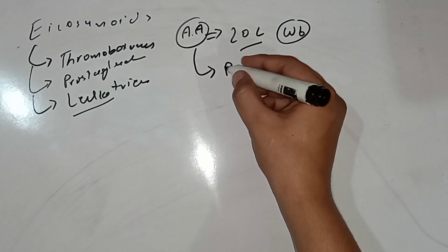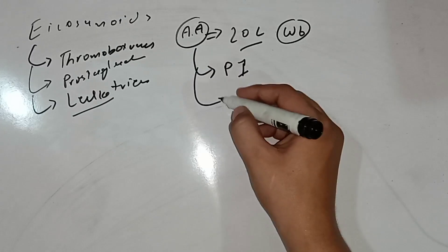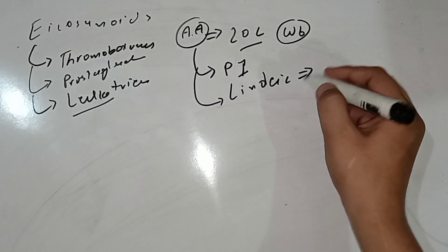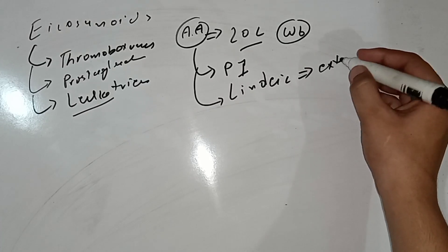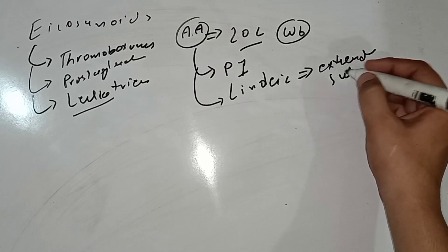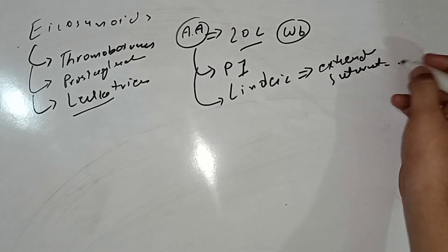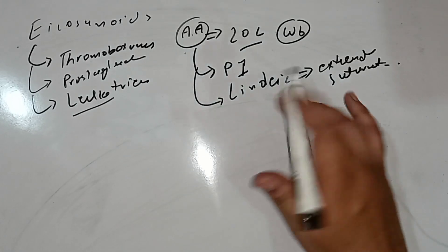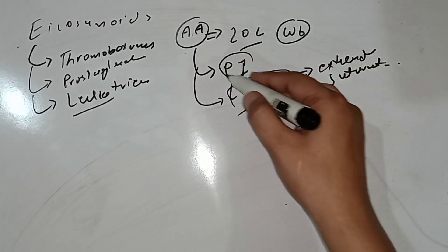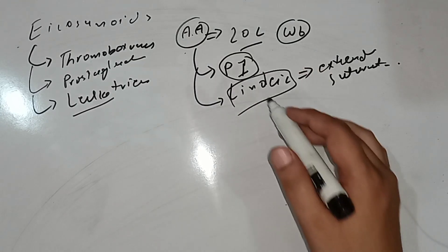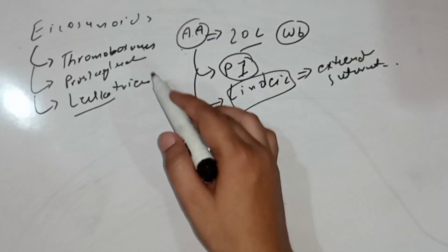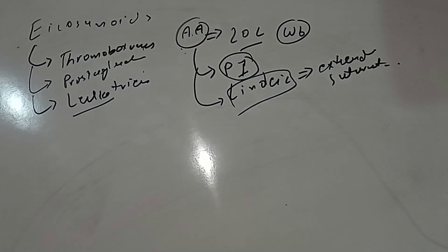Arachidonic acid is found in cellular membranes in association with phosphatidylinositol, or it is synthesized from linoleic acid. Linoleic acid is extended and converted into arachidonic acid. So arachidonic acid is synthesized from the essential fatty acid linoleic acid, or it is present in the cellular membrane in association with phosphatidylinositol, and it is converted into three classes of compounds: thromboxanes, prostaglandins, and leukotrienes.